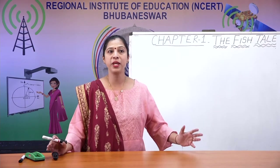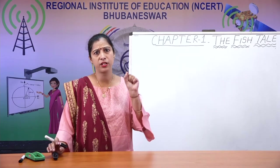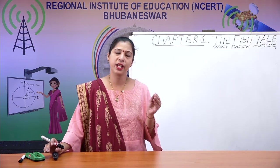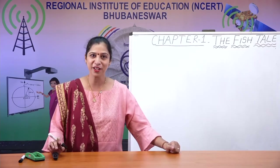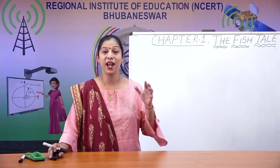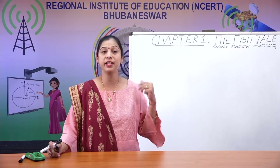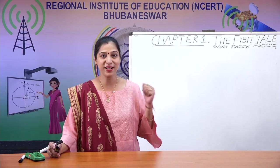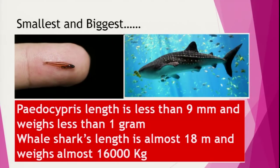The largest fish is the whale shark. Its length can go up to 18 meters and it weighs almost 16,000 kilograms. The smallest fish is only nine millimeters and weighs less than one gram. One meter equals 100 centimeters, and the smallest fish is less than one centimeter — so imagine how big the whale shark is!